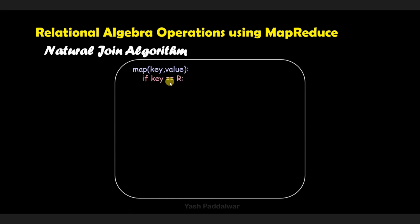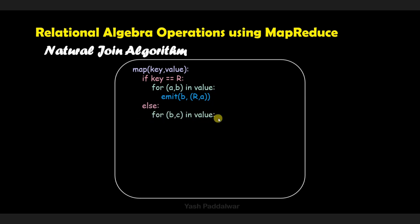How can we do this? Let's see with the help of the algorithm. In the MapReduce algorithm, there are majorly two tasks: first is the Map and second is the Reduce. In the Map task, we will check with an IF condition whether the relation is R or S. R is table 1 and S is table 2. If the relation is R, we iterate over all values and emit key-value pairs in the form of (B, (R, A)), where B is the common attribute. Table 1 contains attributes A and B, and table 2 contains attributes B and C.